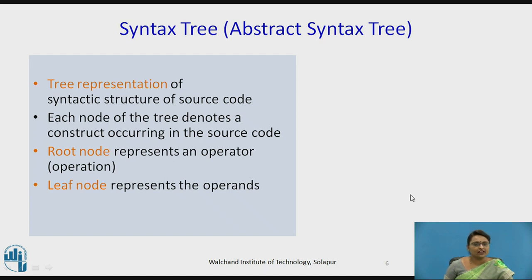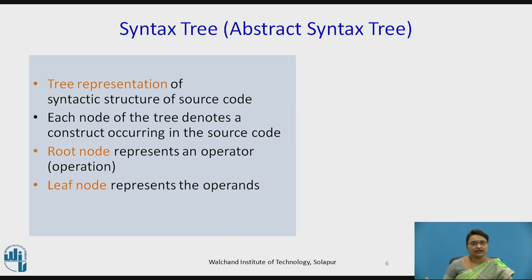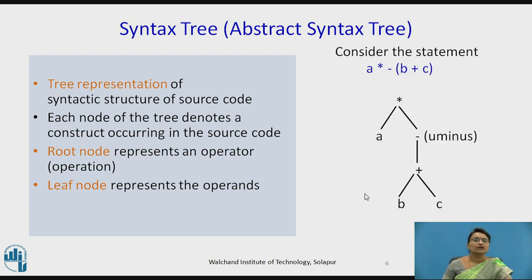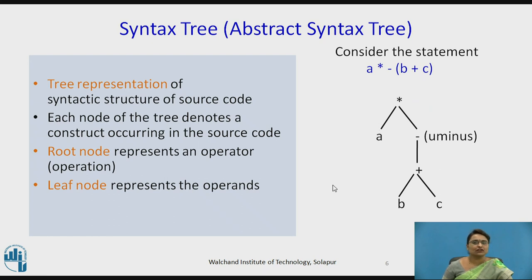The syntax tree is a tree representation of the syntactic structure of source code — how the source code is executing and what is the sequence of code execution. Each node of the tree denotes a construct occurring in the source code. In the tree, root nodes always represent operations and leaf nodes represent operands. For example, the statement a * (–b + c): according to the precedence of operations, b + c is evaluated first, then unary negation is applied, and then it is multiplied by a.